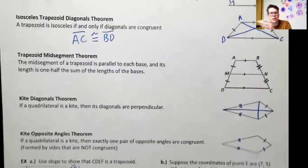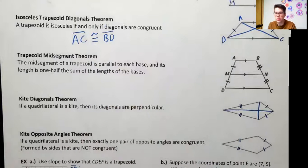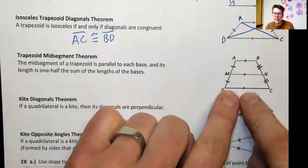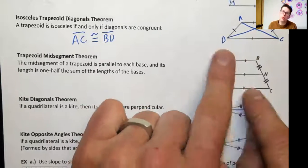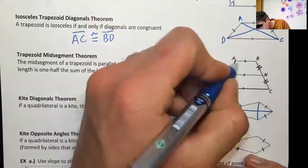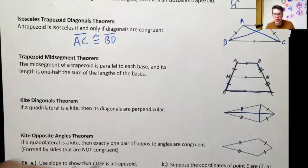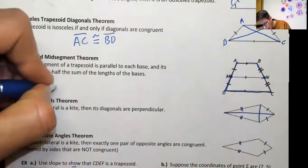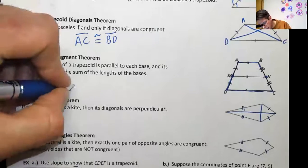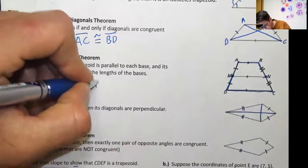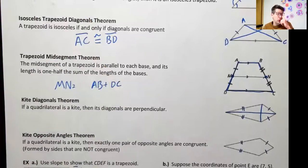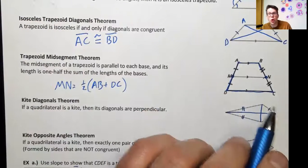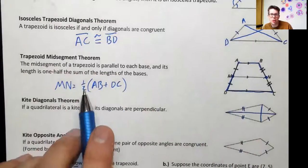Next is the mid-segment. A mid-segment is something we talked about with triangles — connecting one midpoint to another midpoint. Basically, a trapezoid looks like a triangle with the top snipped off. For trapezoid ABCD, if you find the midpoints M and N and connect them, that mid-segment MN has a length equal to the average of the two parallel bases: MN = (AB + DC) / 2. One base is too short, one is too long — you add them up and cut in half to get the one that's just right.